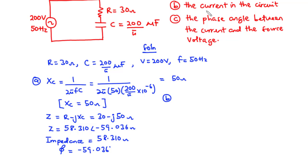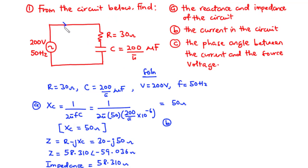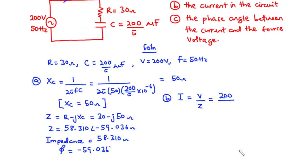For part B, we find the current in the circuit. The current equals the supply voltage divided by the impedance, so I equals 200 divided by 58.310, which gives 3.43 amperes.